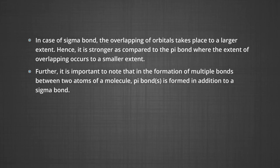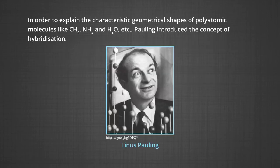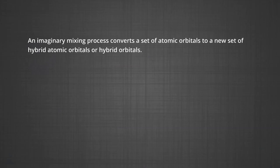Now let us discuss hybridization. In order to explain the characteristic geometrical shapes of polyatomic molecules like methane, ammonia, water, etc., Pauling introduced the concept of hybridization. According to him, atomic orbitals combine to form a new set of equivalent orbitals known as hybrid orbitals. An imaginary mixing process converts a set of atomic orbitals to a new set of hybrid atomic orbitals. At this level, we consider the following hybrid orbitals: SP, SP2, SP3, SP3D, and SP3D2. Unlike pure orbitals, hybrid orbitals are used in bond formation.